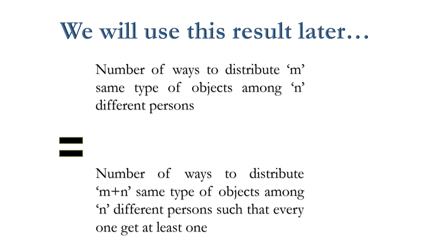Now coming to the main question. Suppose these are n number of persons and these are m same type of objects. We have to distribute these objects in n persons. So we have to make n groups among these m objects. Here we can use separators.